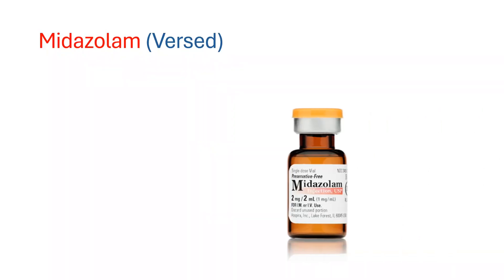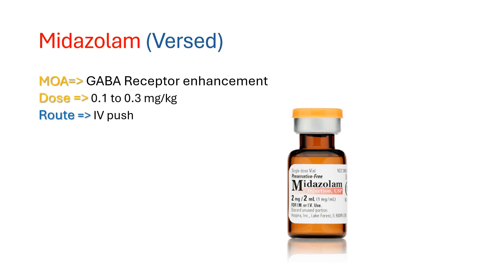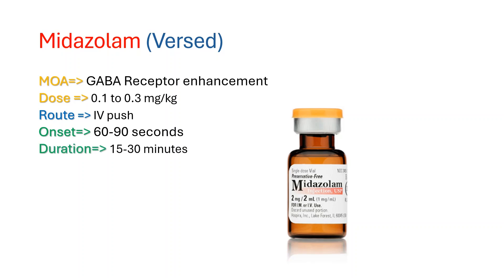Midazolam, brand name Versed, is a benzodiazepine that causes sedation and amnesia through its effect on the GABA receptor complex. It is the most rapidly acting benzo commonly used for rapid sequence intubation, but uncommonly used as a sole induction agent for RSI due to its slower onset of action and unreliable level of sedation. If Versed is the only available option, the induction dose is 0.1 to 0.3 mg per kg, with an onset of action of 60 to 90 seconds and a duration of action of 15 to 30 minutes. Co-administration with fentanyl should be considered to decrease the onset of action.